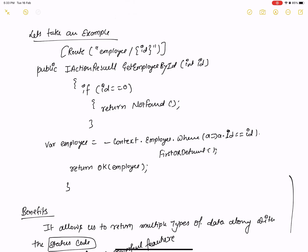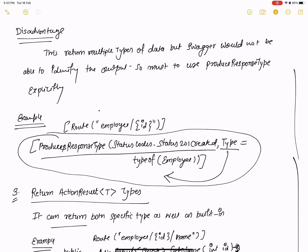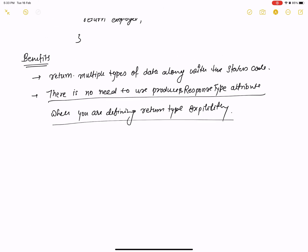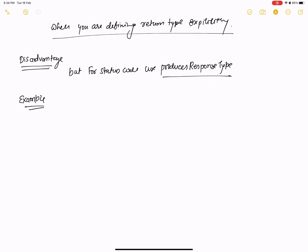To summarize the difference: in IActionResult, you must define both the type and status code explicitly using ProducesResponseType. In ActionResult<T>, there is no need to define ProducesResponseType for the explicit return type, but you still need it for status codes. That is the key difference between IActionResult and ActionResult<T>.